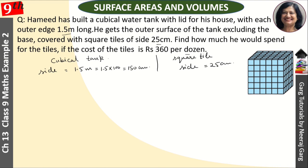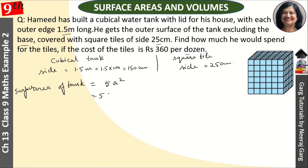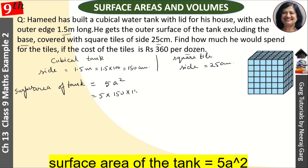So this is the cubical tank. We leave the base and cover the rest — that means 4 sides plus the lid. The area of the surface of the tank to be covered is 5 sides, so it is 5a², which gives us 5 × 150 × 150.